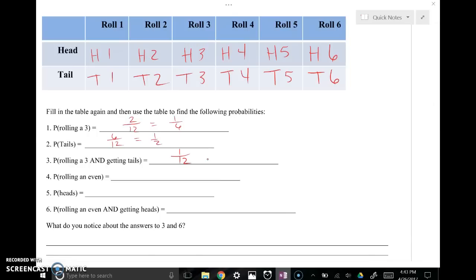rolling an even. Okay, so even numbers on a die would be 2, 4, or 6. So here's 2 for the 2, 2 for the 4, 2 for the 6. So that would be 6 out of the 12 total possible, which would be 1 half. How about the probability of getting heads? Well, that's these top 6 here. So that would be 6 out of 12, or 1 half. Notice I'm reducing every single one of these fractions. Probability of rolling an even and getting, tossing a coin and getting heads on that coin. Those two things have to happen at the same time. So heads with a 2, heads with a 4, heads with a 6. That's 3 out of the total 12 options, or 1 fourth.